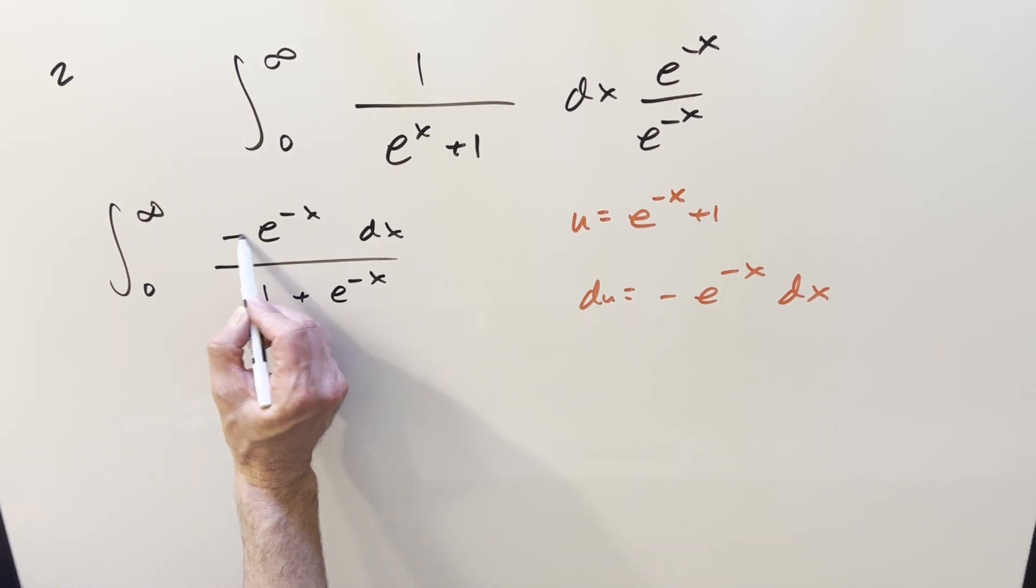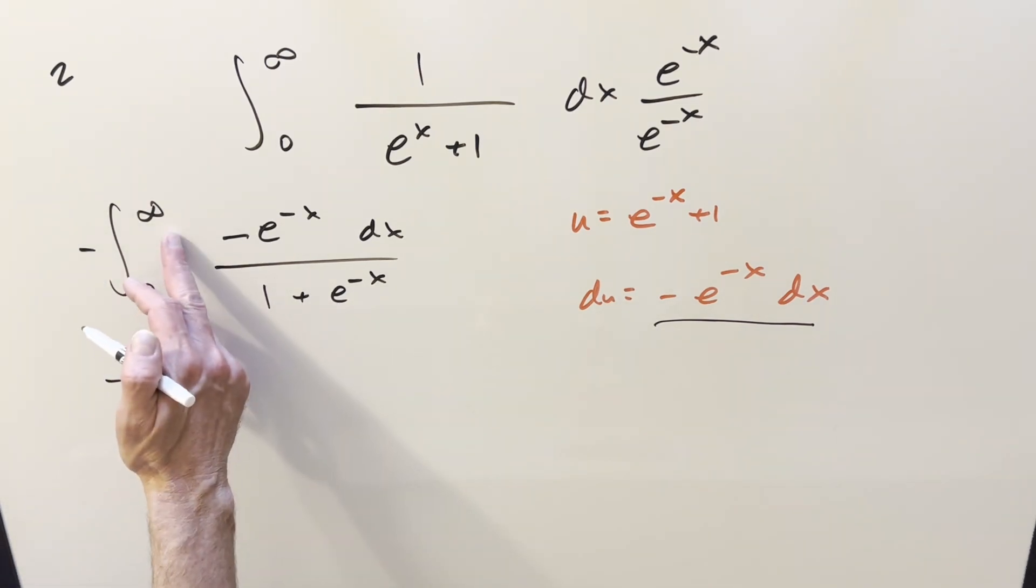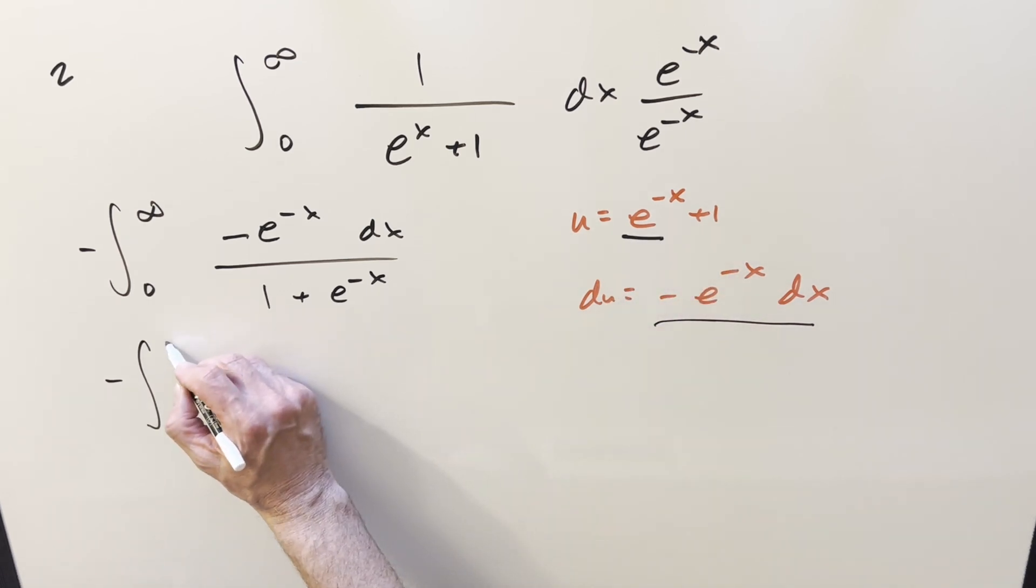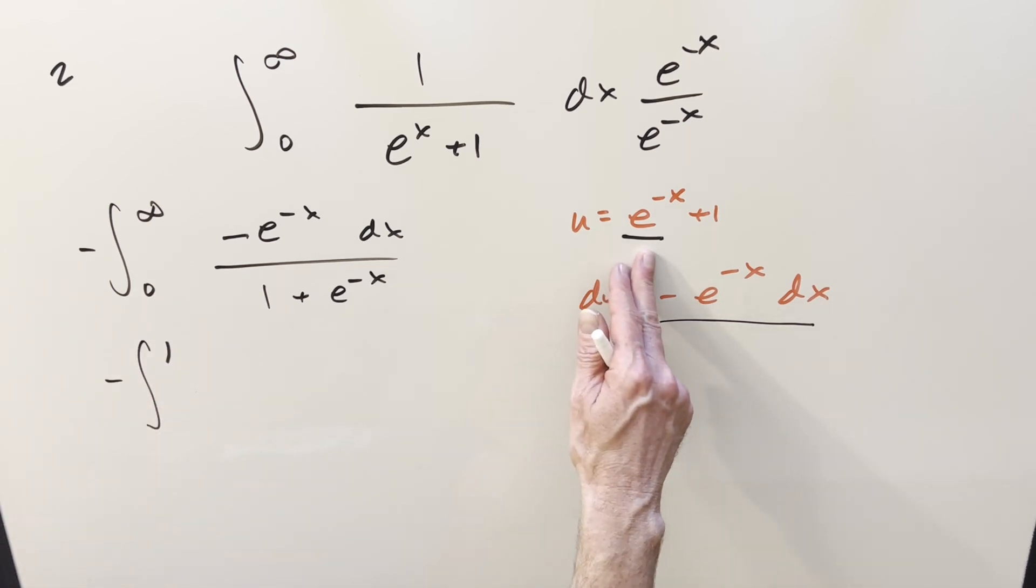So now to set this up, let's just multiply a minus in here out front, just to match our du. But we don't want to change it. We multiply a minus there. And then when we substitute, we'll plug in infinity here. This is going to zero, but then we get the plus 1. So upper bound, 1. Then plug in a zero. This becomes a 1 plus 1. Lower bound is 2.